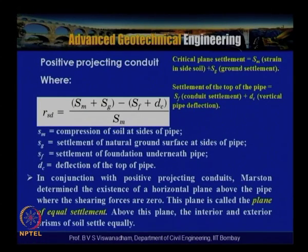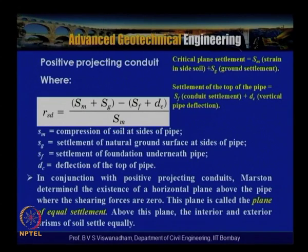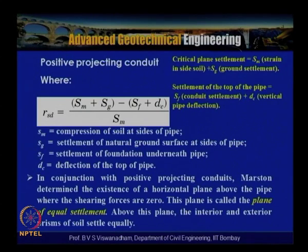In conjunction with positive projecting conduits, Marston determined the existence of a horizontal plane above the pipe where shearing forces are zero — the plane of equal settlement. Above this plane, the interior and exterior prisms of soil settle equally.